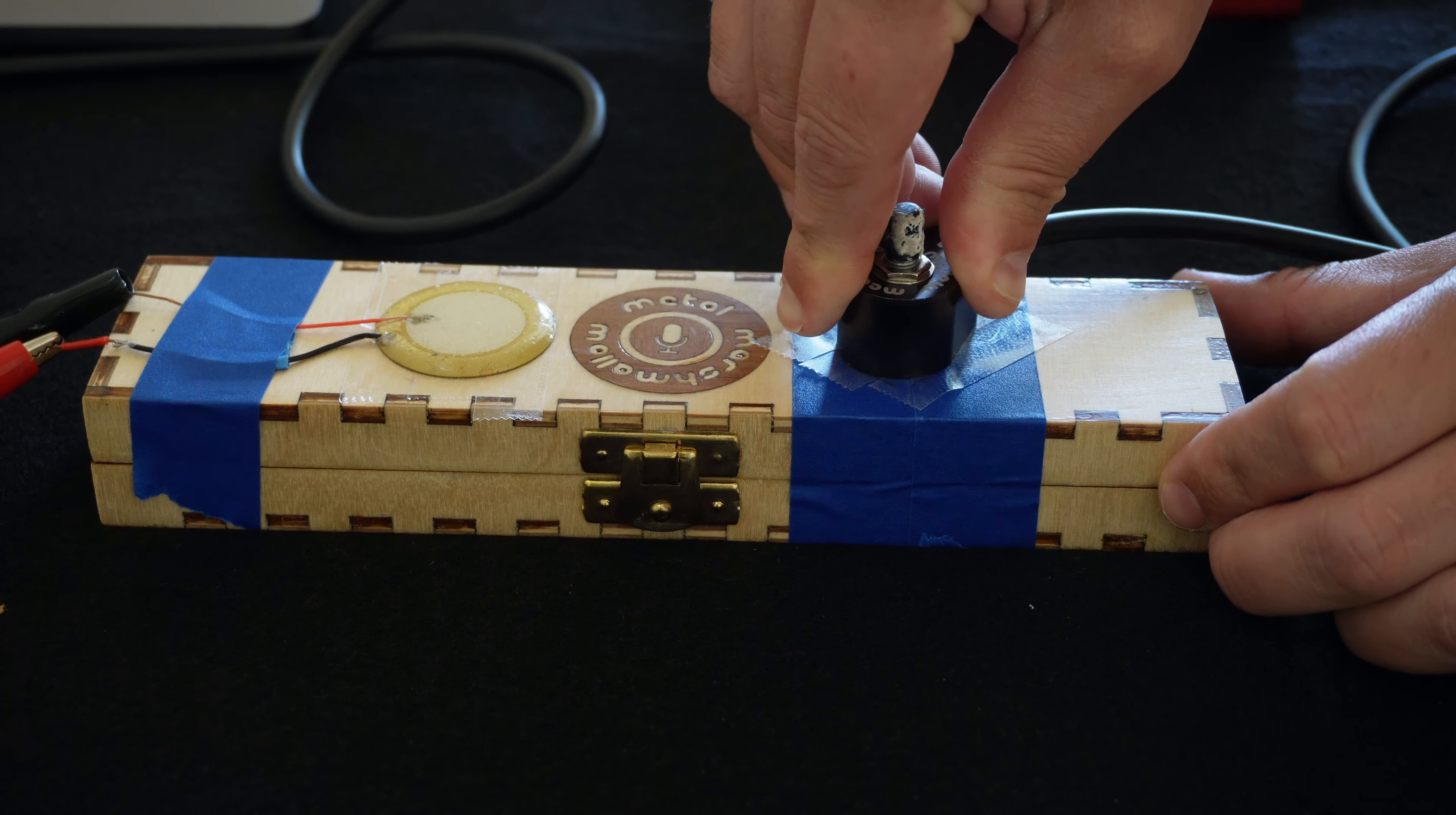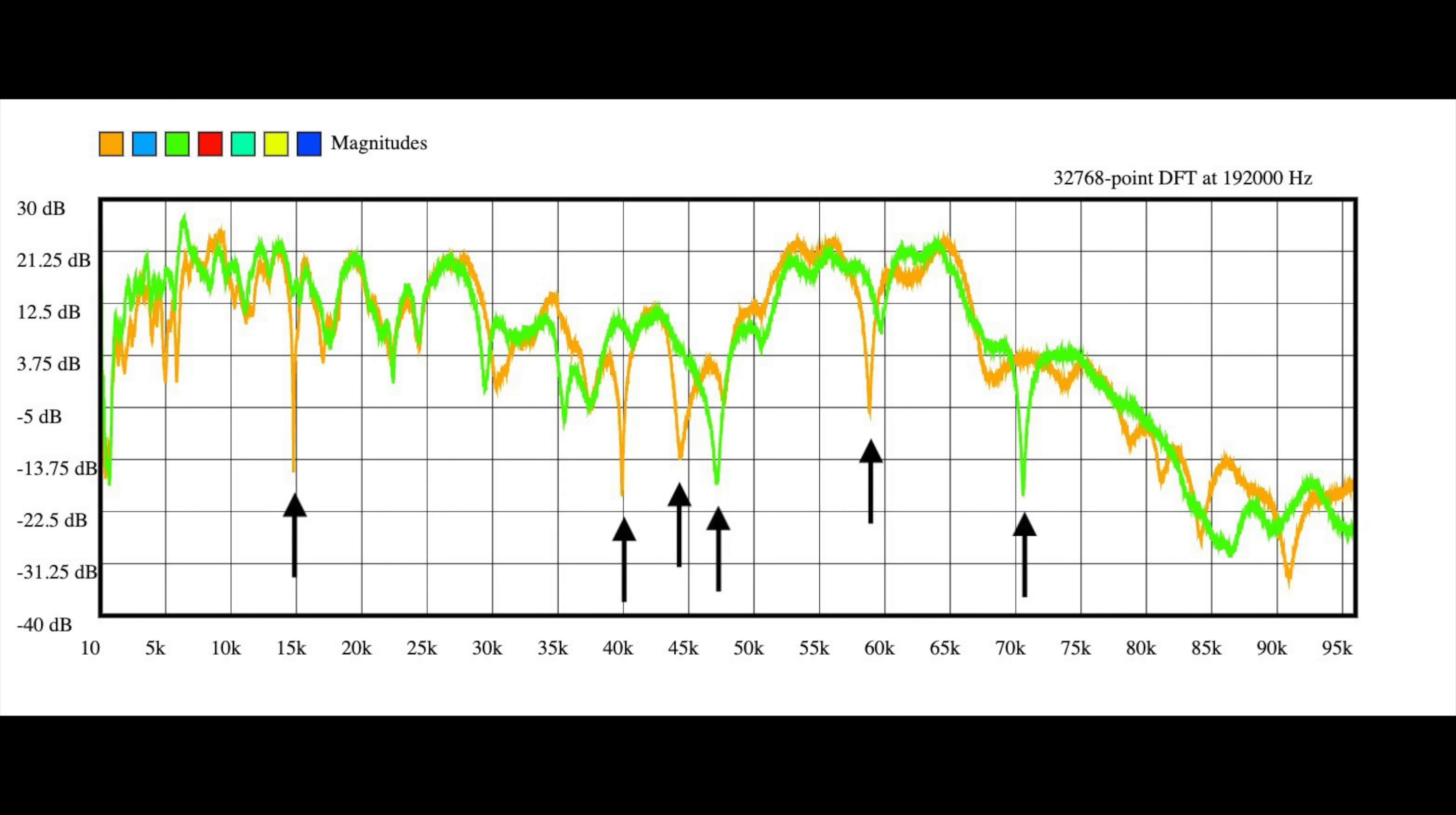This is something that I've noticed many times before—that the presence and exact location of these notches is highly sensitive to the exact placement of the mic. I've never really fully understood it, but at least this tells us that these notches aren't really the result of the presence or absence of putty.